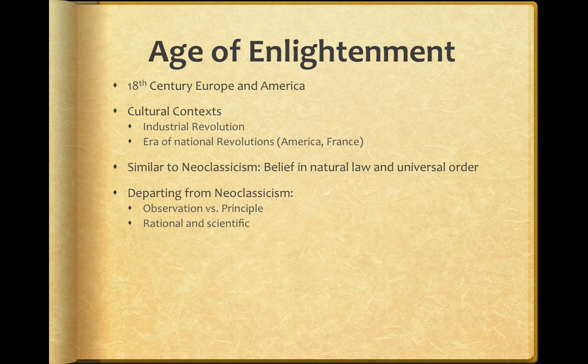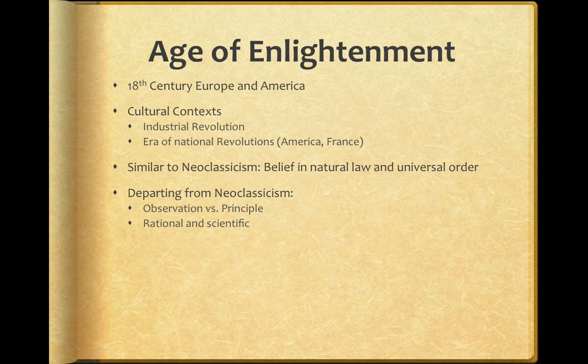The Age of Enlightenment really starts down the road toward being able to scientifically and rationally justify why we do things. Thinkers like Thomas Jefferson, Rousseau, and others say you can rationally justify democracy — you can argue someone into believing that democracy is the right way to run a country. The way we do this is through studying things, investigating whether the way we're doing things today works, and if that investigation says no, then we change it and try to get better.